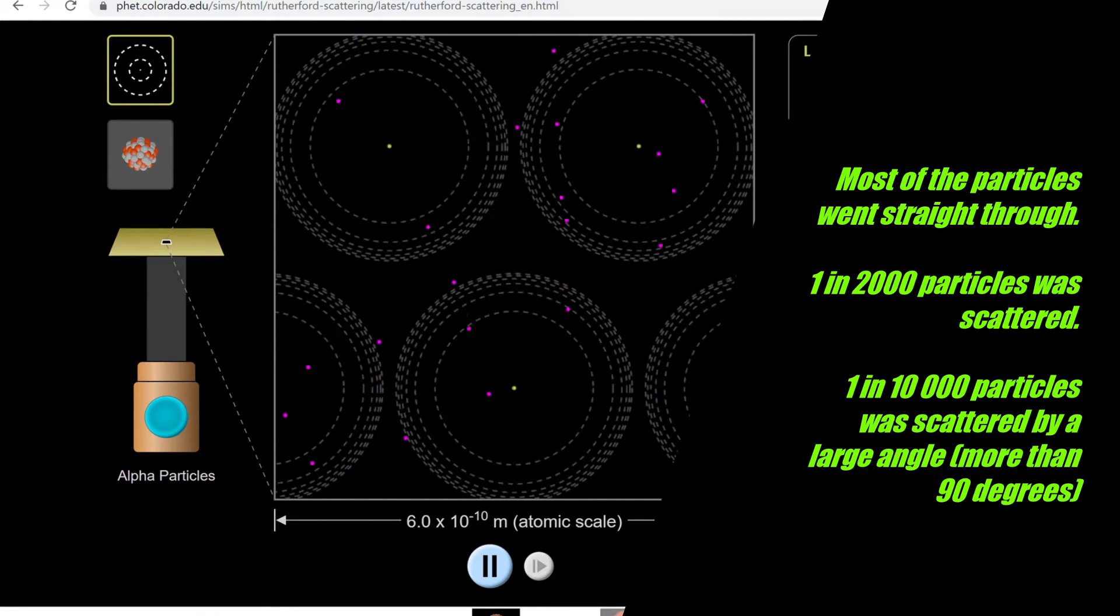And what Rutherford discovered was that even though most of the particles went straight through, about 1 in every 2,000 particles was scattered. And very few of those particles, about 1 in about 10,000 or so, were deflected through some very large angles of more than 90 degrees. He was completely shocked by those results.